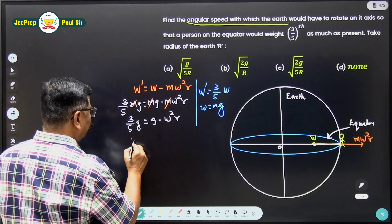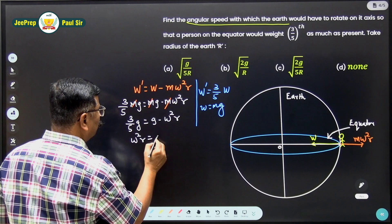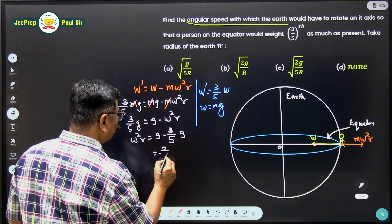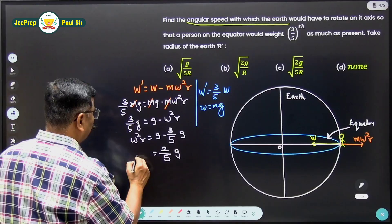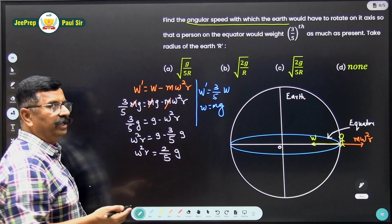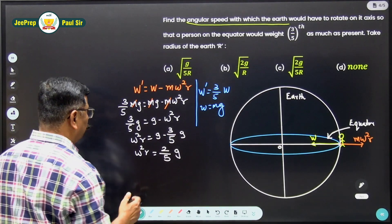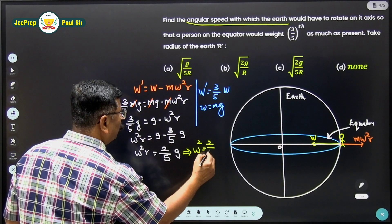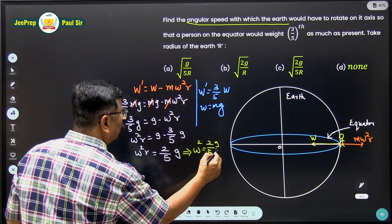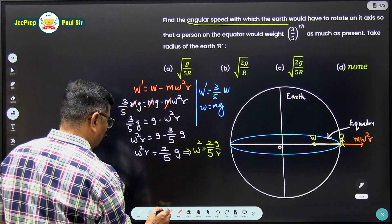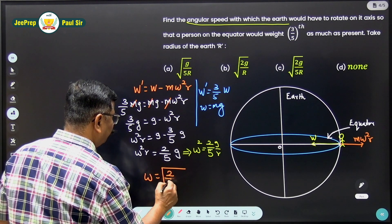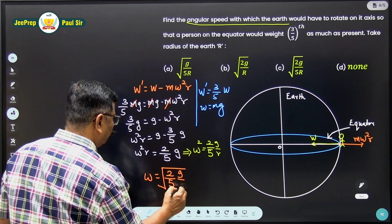So omega square r equals g minus 3/5 g. So this comes out to be 2/5 g. Now we want to find out the angular speed and omega is the angular speed. So therefore, omega square equals 2/5 g upon r. Hence, omega equals square root of 2/5 g upon r.